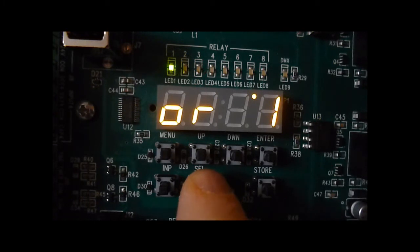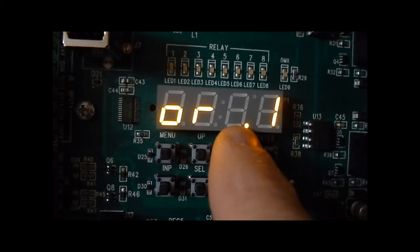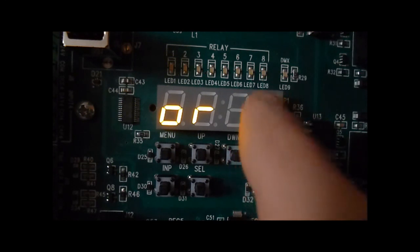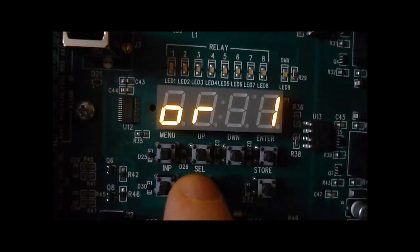Press it again and the relay and zero to ten output are overridden into the off state. To return control to the inputs or to DMX, press select again. Both LEDs are out and control returns to the other inputs.